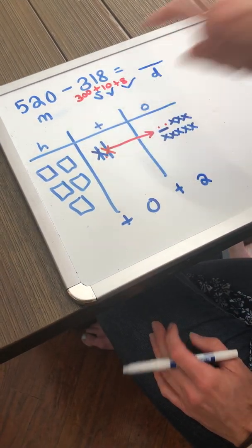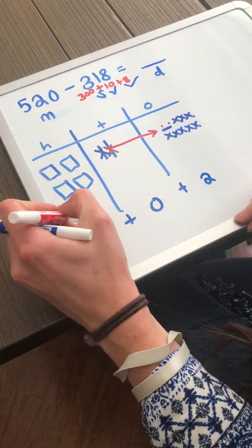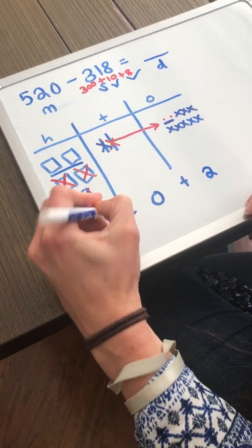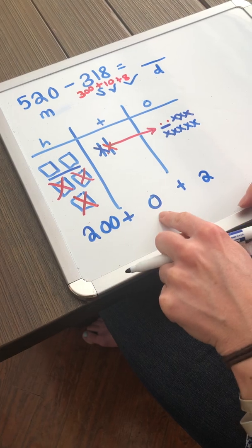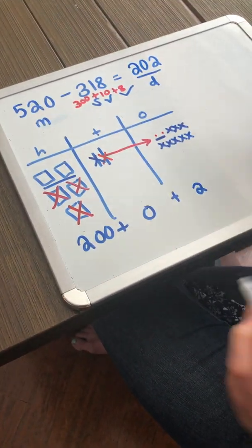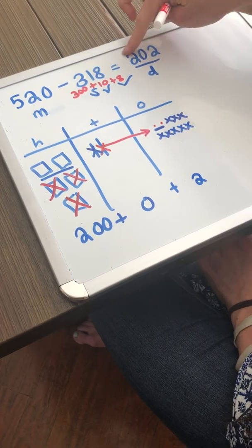Now it's time to take away 300. 100, 200, 300. I am left with 200. My answer is 202. Remember we've got to put that placeholder in there. It's not 22 and it's not 220. It's 202.